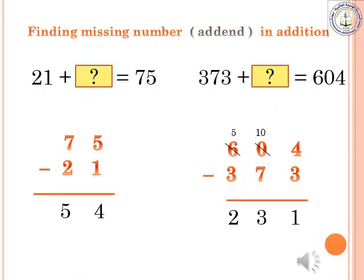Finding missing number in addition. First example: 21 plus dash equals 75. The second number is missing. To find this missing number we can use subtraction: 75 minus 21. We arrange these numbers and do subtraction, starting from the ones place: 5 minus 1 is 4. In the tens place: 7 minus 2 is 5. So the answer is 54.